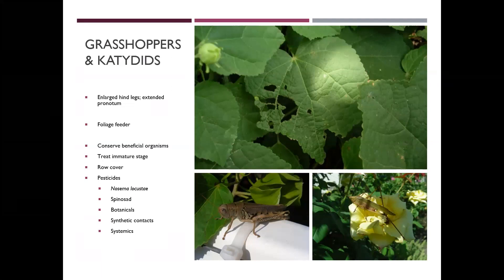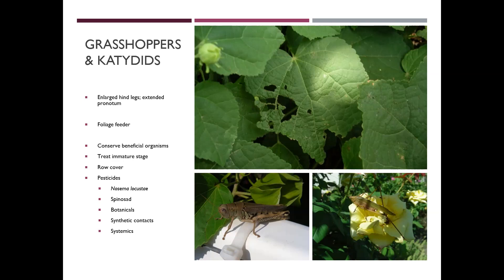Grasshoppers and katydids — everybody knows what these look like. They have large mandibles and chewing mouthparts, and these are going to cause damage in both the immature and adult stages. Your damage here is going to be dependent upon the size of the insect. Think about tiny grasshoppers that just emerged out of the egg — and this would also go for caterpillars or leaf-feeding beetles.